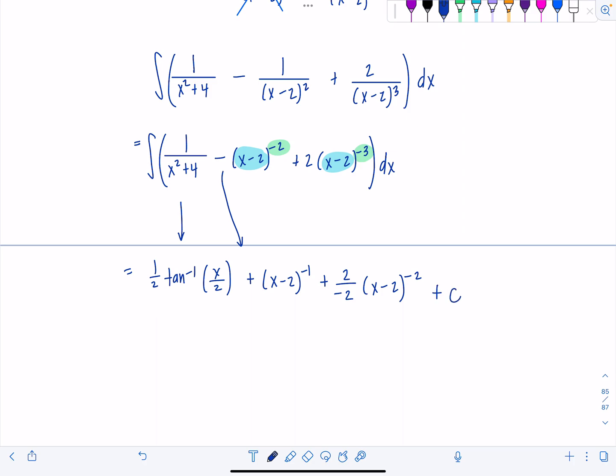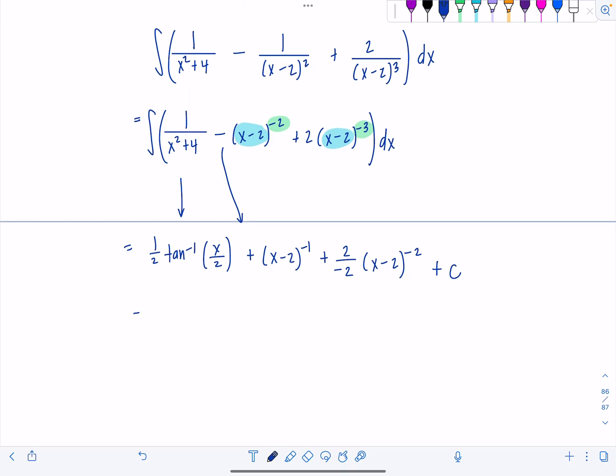Put plus c immediately. Some of my students have been leaving it off and then just putting it at the very end. That's a no-go. I still do minus 1. They got to get it together. And then final answer. 1 half tan inverse x over 2. Then we should write this as plus 1 over x minus 2 minus 1 over x minus 2 squared plus c.